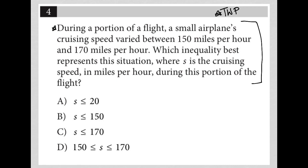The first sentence says during a portion of a flight, a small airplane's cruising speed varied between 150 miles per hour and 170 miles per hour.